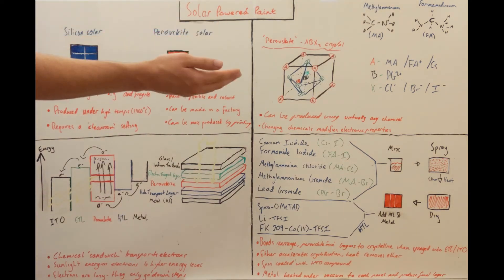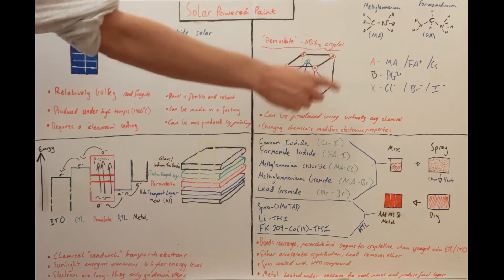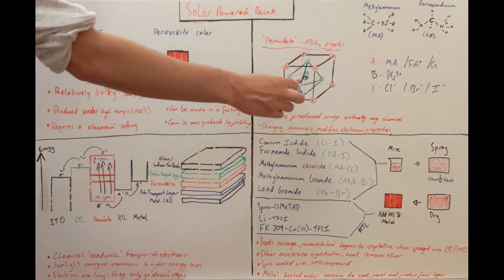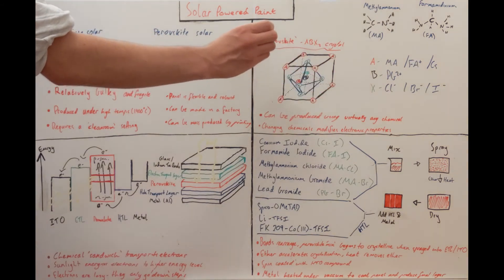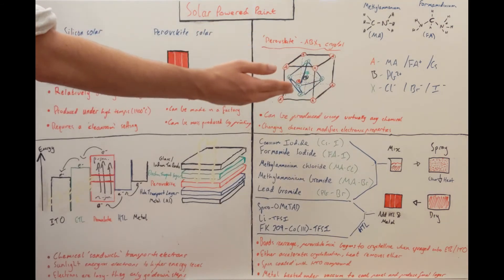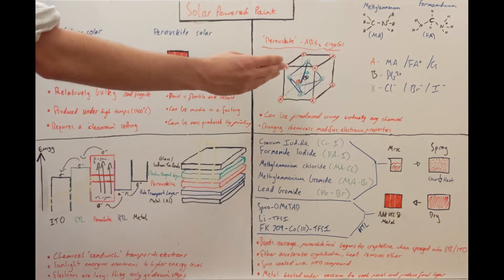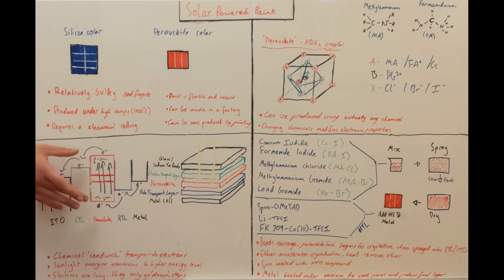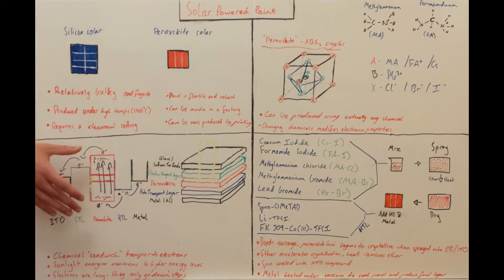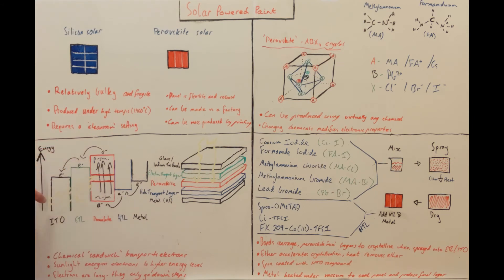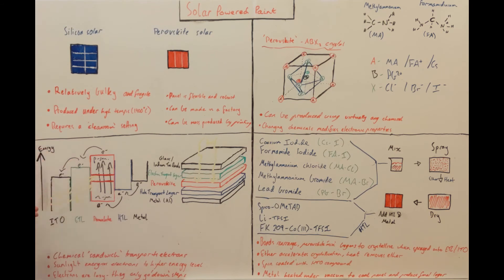Because perovskite can be made from virtually any material on the periodic table, substituting different atoms into the crystal structure causes the whole crystal to increase or decrease in volume. That change in size alters the electronic properties of the crystal — specifically, it changes the energy gap an electron must cross to go from a ground state to an excited state. This means we can tune the energy requirements of the perovskite to respond to different wavelengths of light, since different wavelengths carry different levels of energy. That is a pretty amazing property.